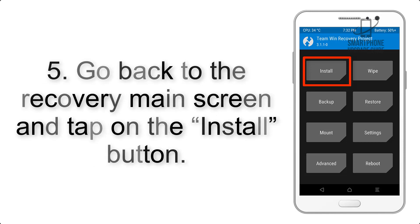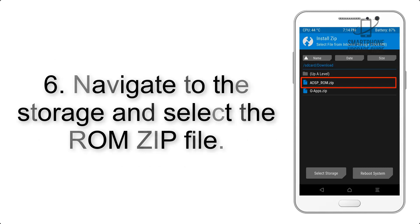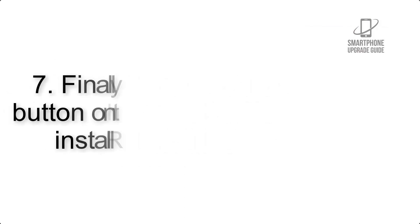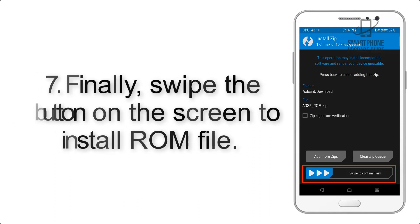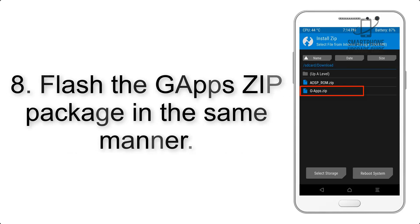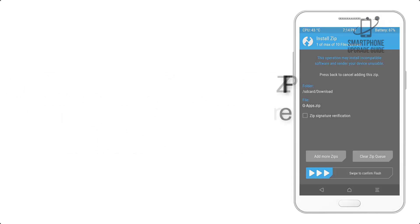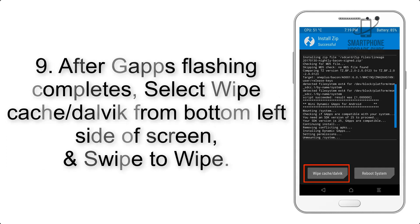Step 5: Go back to the recovery main screen and tap on the Install button. Step 6: Navigate to the storage and select the ROM zip file. Step 7: Finally, swipe the button on the screen to install the ROM file. Step 8: Flash the GApps zip package in the same manner.